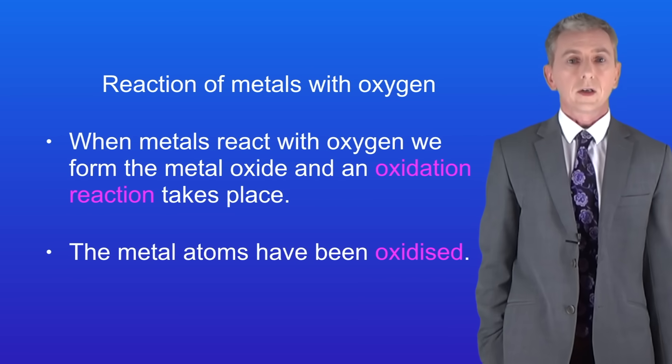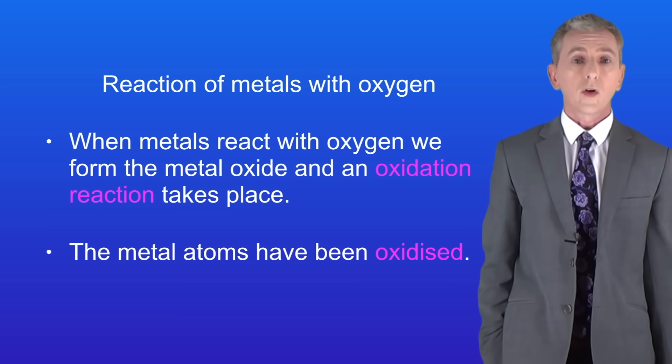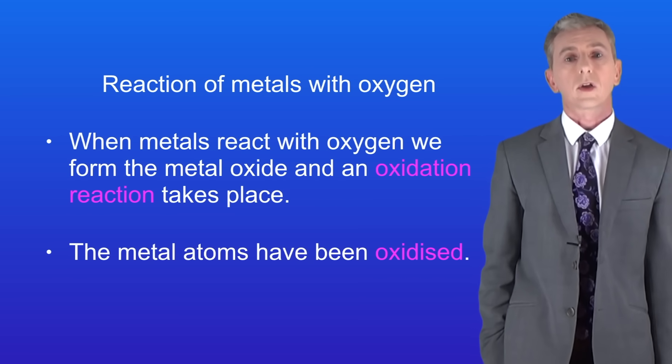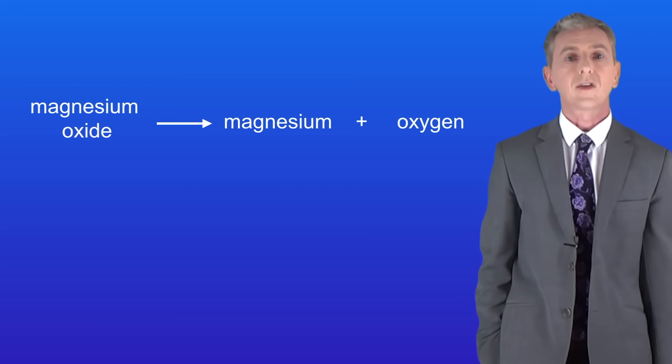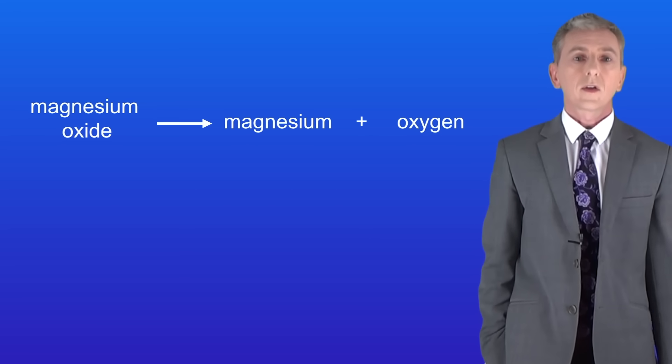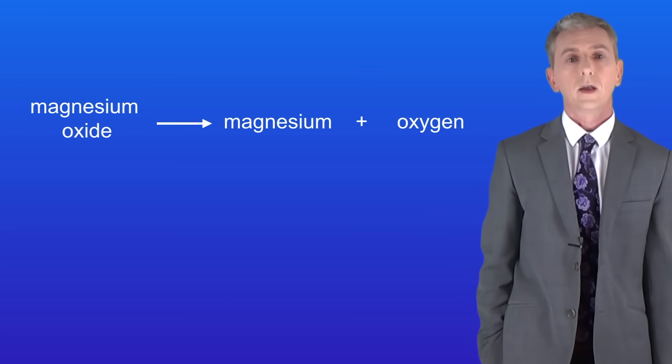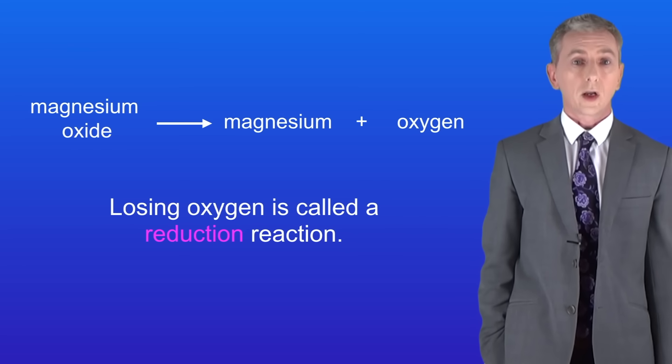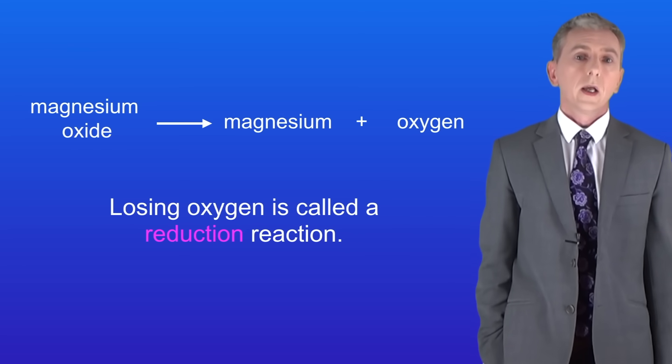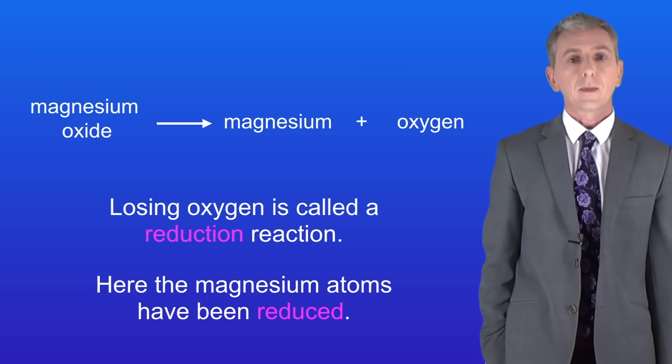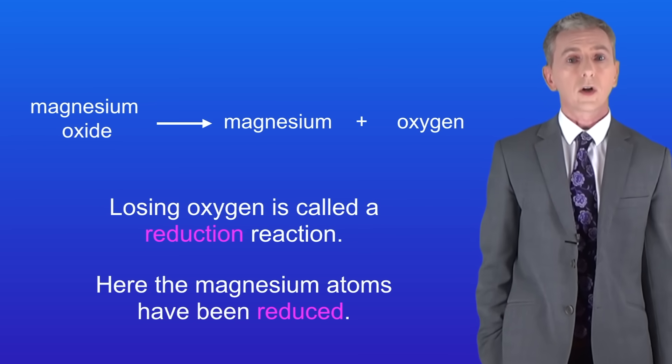Now in later videos we're going to look at how we can remove oxygen from metal compounds. I'm showing you here this reaction for magnesium oxide. So you can see that we've taken magnesium oxide and split the compound back into the elements magnesium and oxygen. Losing oxygen is called a reduction reaction. So as you can see here the magnesium atoms have been reduced, in other words they've lost oxygen.